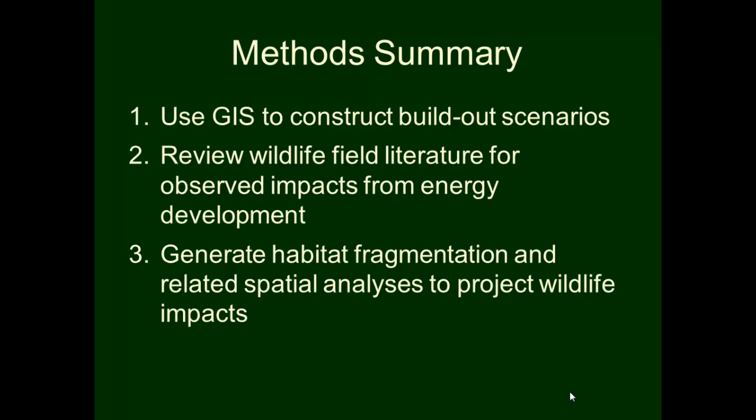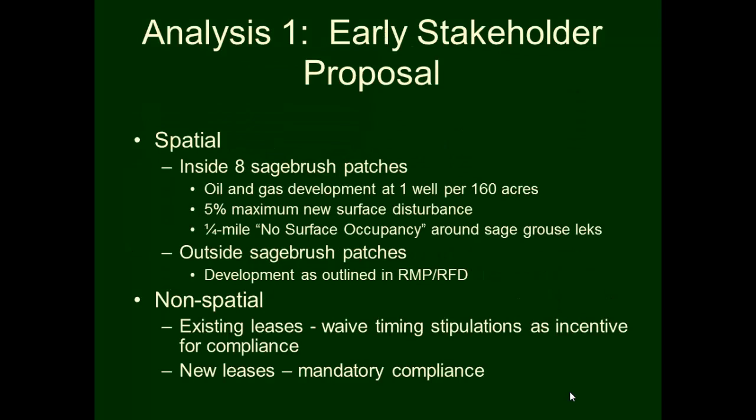Over the course of the six years that the planning process went on, the methods we used included using GIS to construct build-out scenarios to illustrate graphically what different scenarios of development would look like on the ground, reviewing wildlife field literature, and incorporating that with spatial analysis. Based on the particular field literature we found for local species, we designed habitat fragmentation and related spatial analysis to better integrate field science into the planning process.